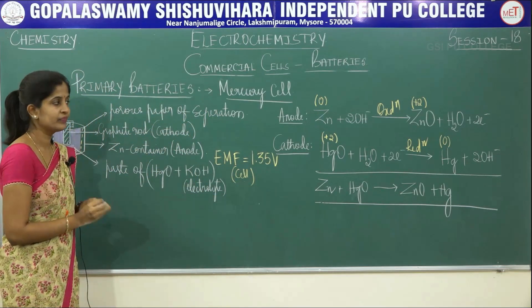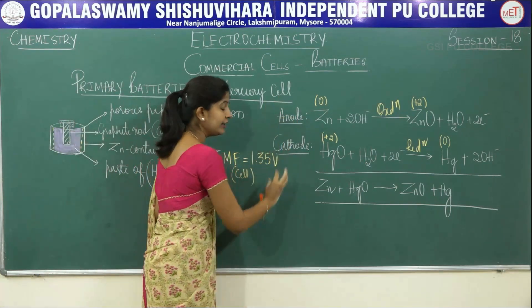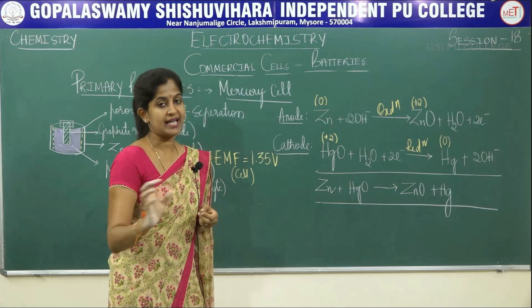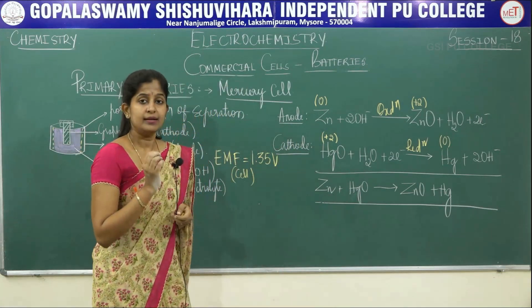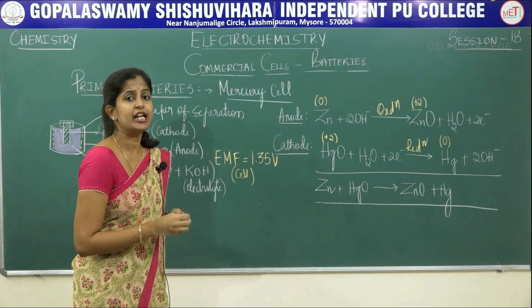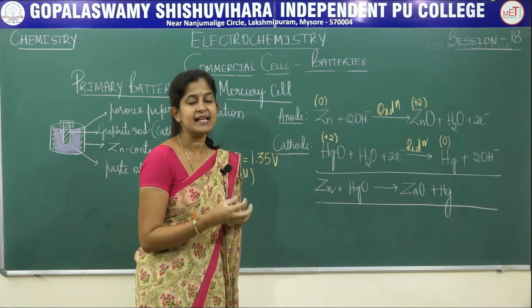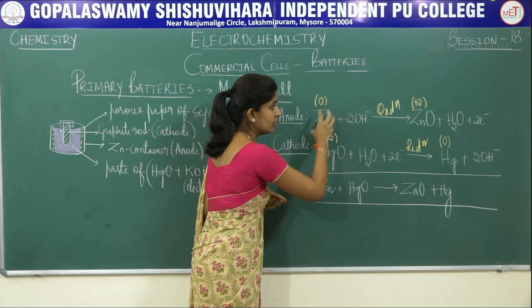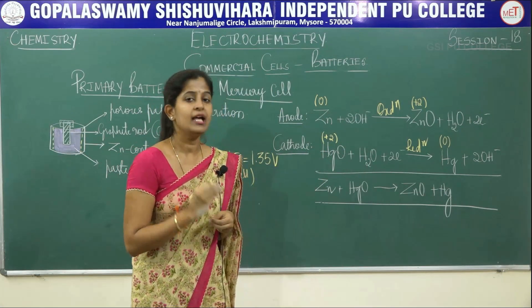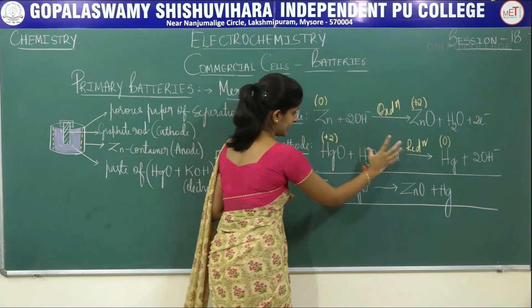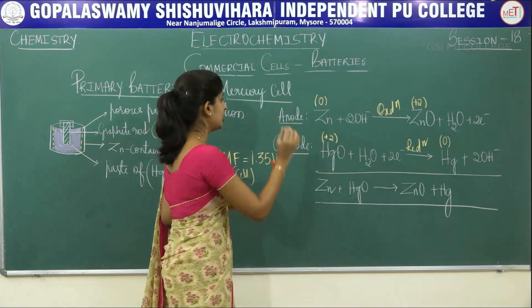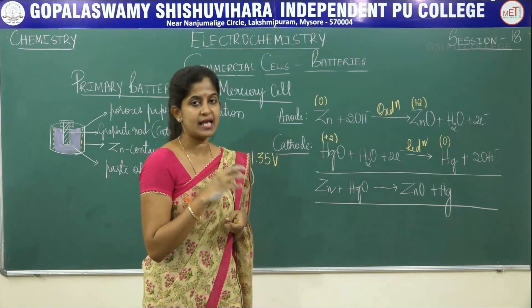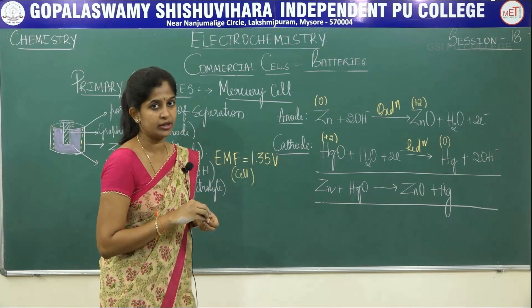In both cells — mercury cell and dry cell — the reactions at anode and cathode are very important and will be asked in exams. The reactions inside these batteries are quite complex; what is presented here is the overall gist of the anode reaction, cathode reaction, and the overall cell reaction. Focus on the reactions at anode and cathode for both the dry cell and mercury cell, as these will be asked for one-mark questions.